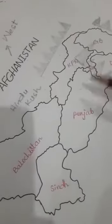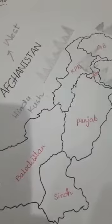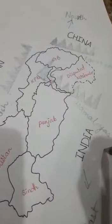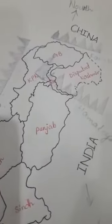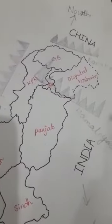Hindu Kush has a height of 7,619 meters and it is located in the west of Karakoram. So this covers the mountain regions of Pakistan.